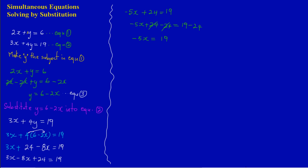19 minus 24 gives a negative result because the face value of 24 is larger than 19, so I have negative 5x equals negative 5. Since negative 5 is multiplying x, I do the opposite — division — and divide both sides by negative 5. A negative divided by a negative gives a positive, so x equals positive 1.